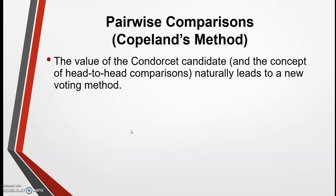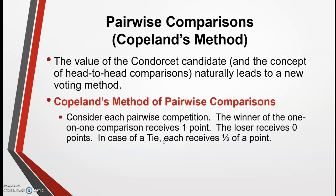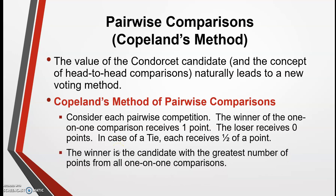The value of the Condorcet candidate and this concept of being able to beat everybody else head-to-head naturally leads to the last voting method we're going to talk about: Copeland's Method of Pairwise Comparison. Consider each pairwise comparison — the winner of each comparison receives one point, the loser receives zero points, and if there is a tie, each candidate receives one half of a point. The candidate with the greatest number of points is awarded the win.